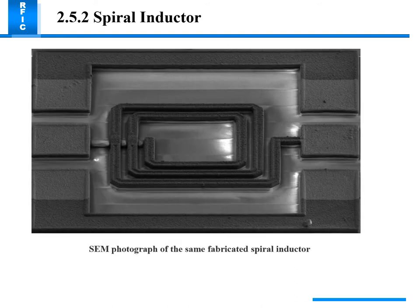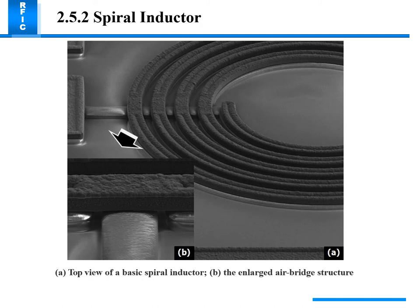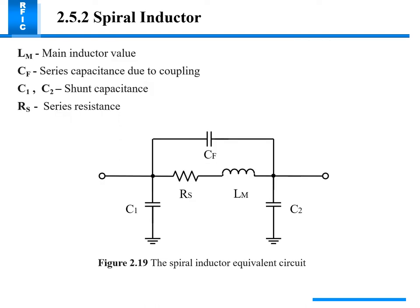An SEM photograph shows the fabricated spiral inductor. The top view shows the basic spiral inductor and an enlarged air bridge structure. The spiral inductor equivalent circuit uses an inductor, series capacitance, shunt capacitance, and series resistance.